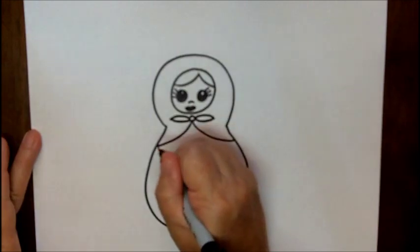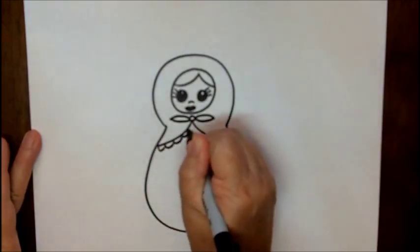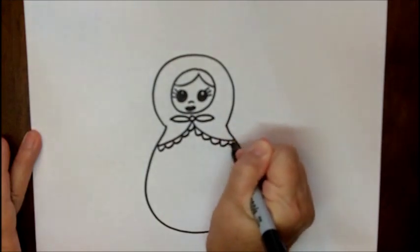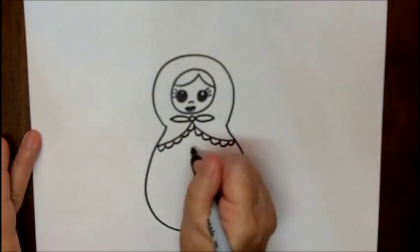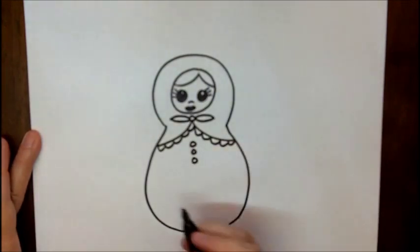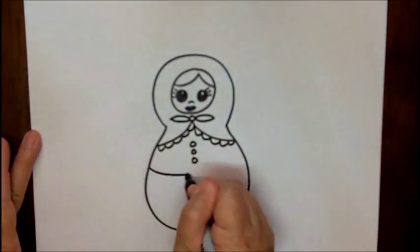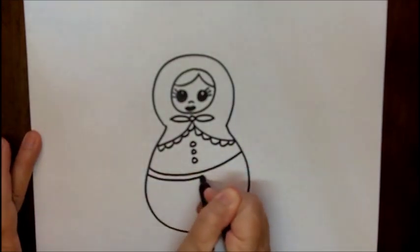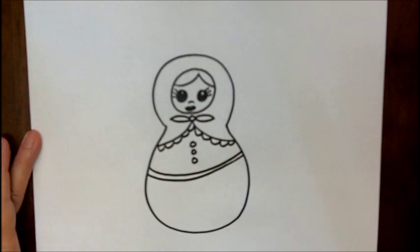I always like to do the little scalloped edges. Those are always fun. Maybe a few buttons and some lines that show where the nesting doll comes apart and holds another nesting doll inside.